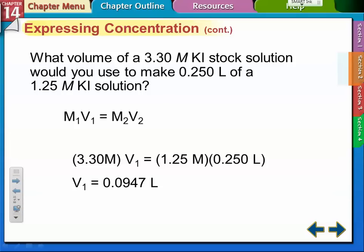The dilution ones use the formula M1V1 equals M2V2. We have our concentrated one is 3.3 molar potassium iodide, and we want to make only 2.5 liters of 1.25 molar. So we set it up like this: 3.3 times V1 equals 1.25 times 2.5.